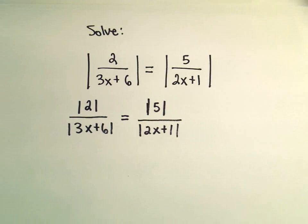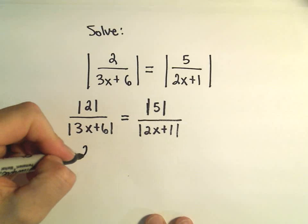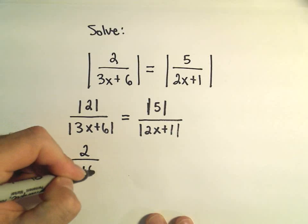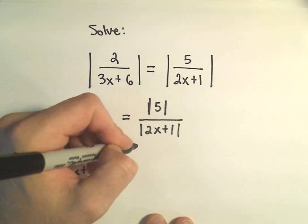Well, certainly we can simplify. The absolute value of 2 is just 2, so we can drop the absolute value there. The same thing with the 5.